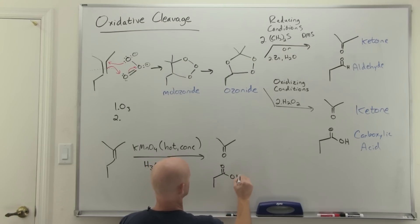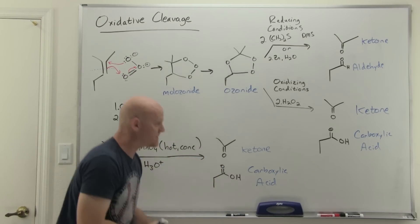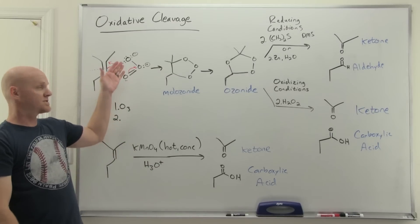Permanganate is definitely a strong oxidizing agent, so again we get a ketone just like we did before. Ketones are always going to be ketones for oxidative cleavage, but instead of getting the aldehyde, again we get the carboxylic acid. Don't have to know the mechanism for this one. The truth is I've never seen students responsible for the mechanism on ozonolysis either.